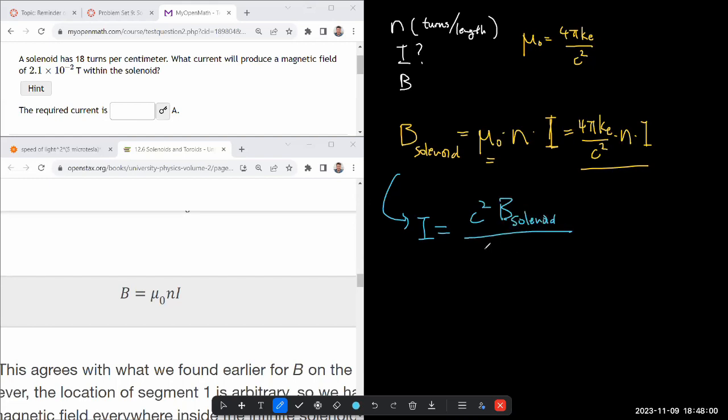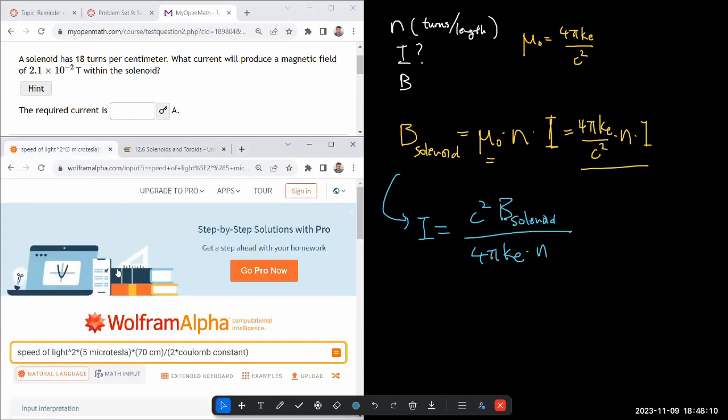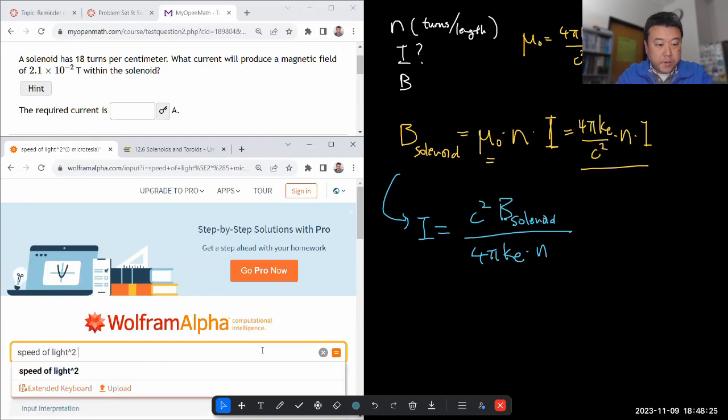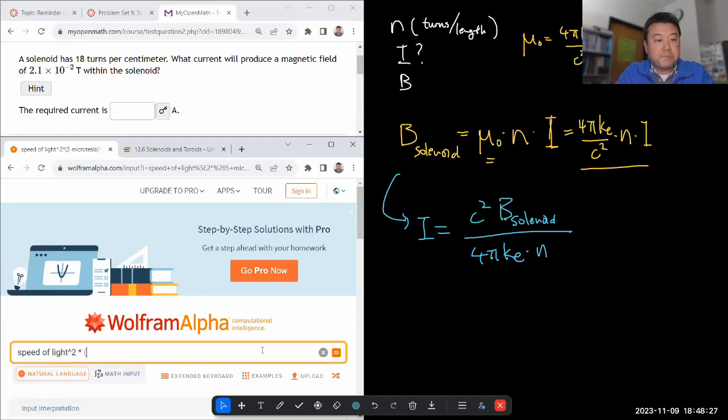And this should be the expression for the current. And I think everything is just a given. So we'll just plug it in. Yeah, 18 turns per centimeter. So for it to, for this solenoid formula to apply, it will have to be pretty long solenoid. So okay, speed of light squared times...